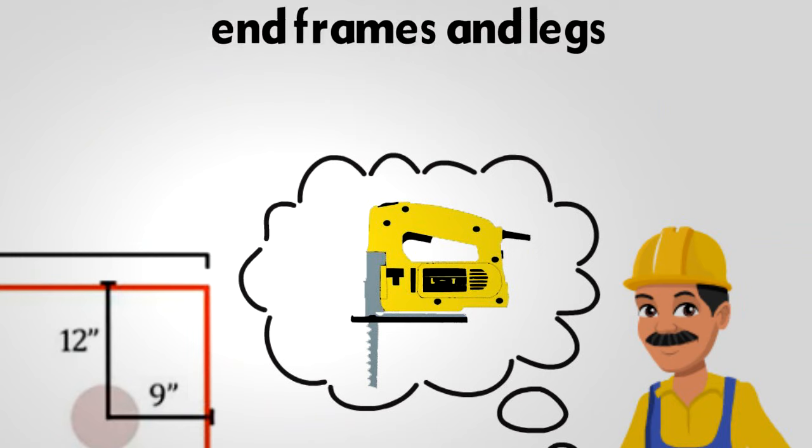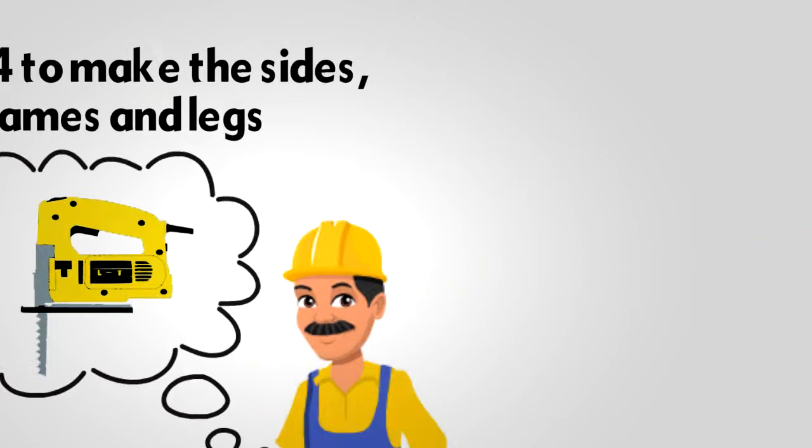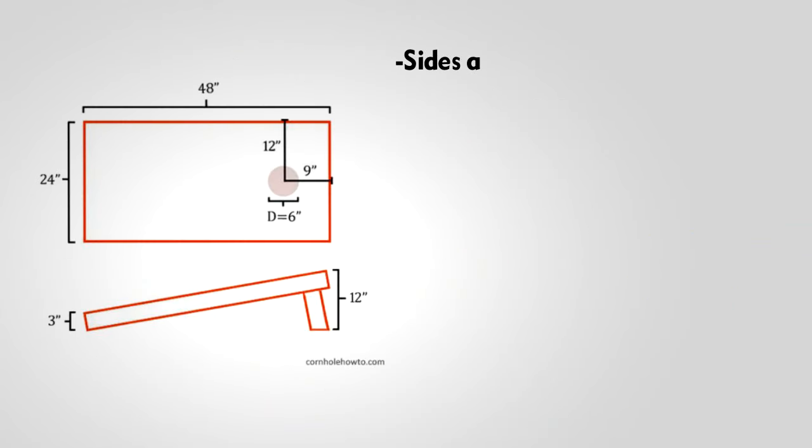Cut the 2 by 4 to make the sides, end frames and legs. Sides are 48 inches long, end frames are 21 inches long, legs are 12 inches.